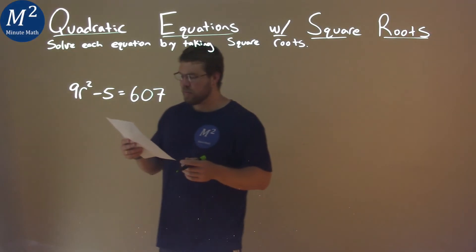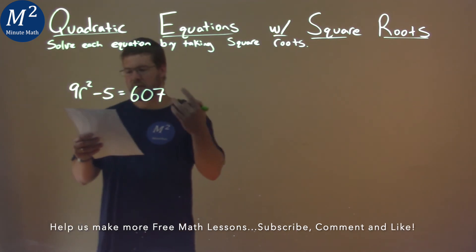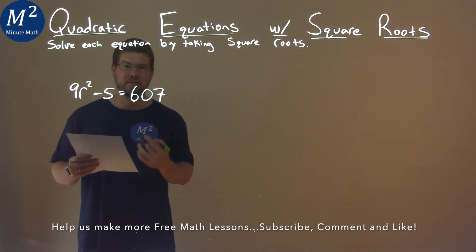We're given this problem right here. 9r squared minus 5 equals 607, and we want to solve this equation by taking some square roots.